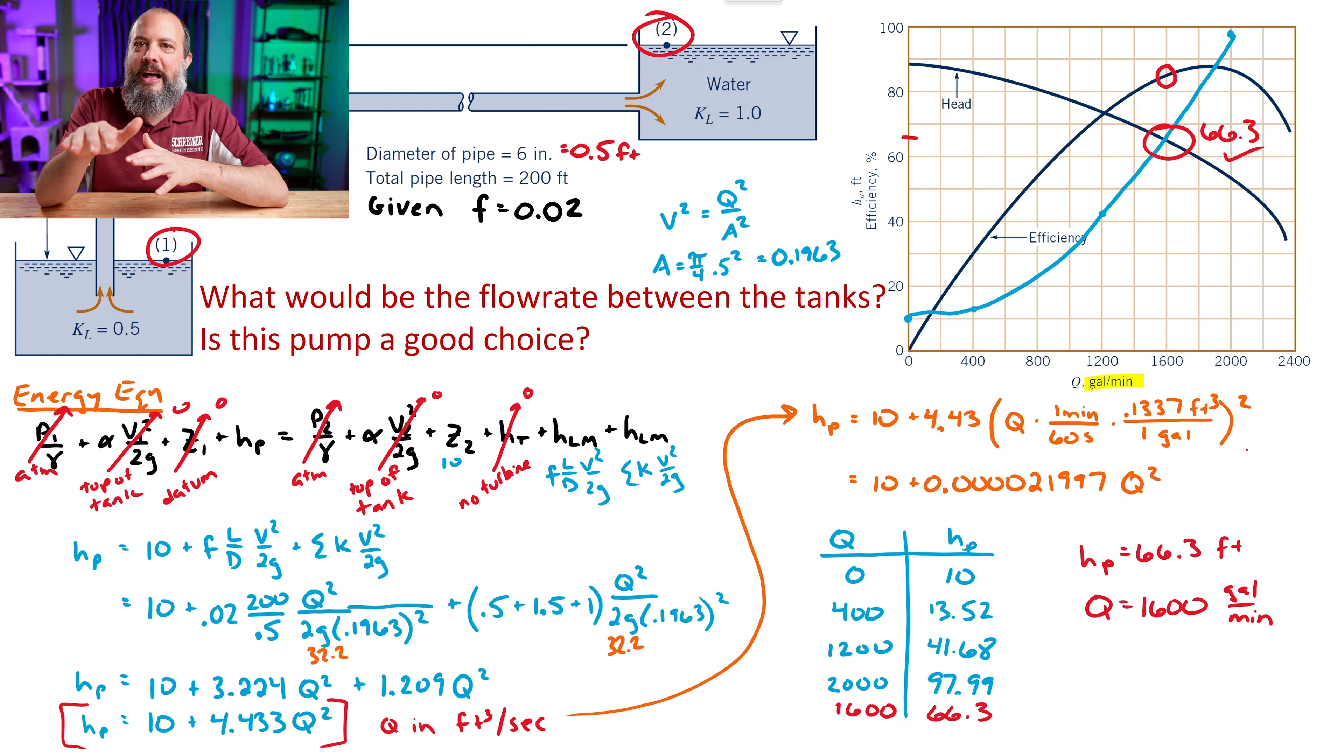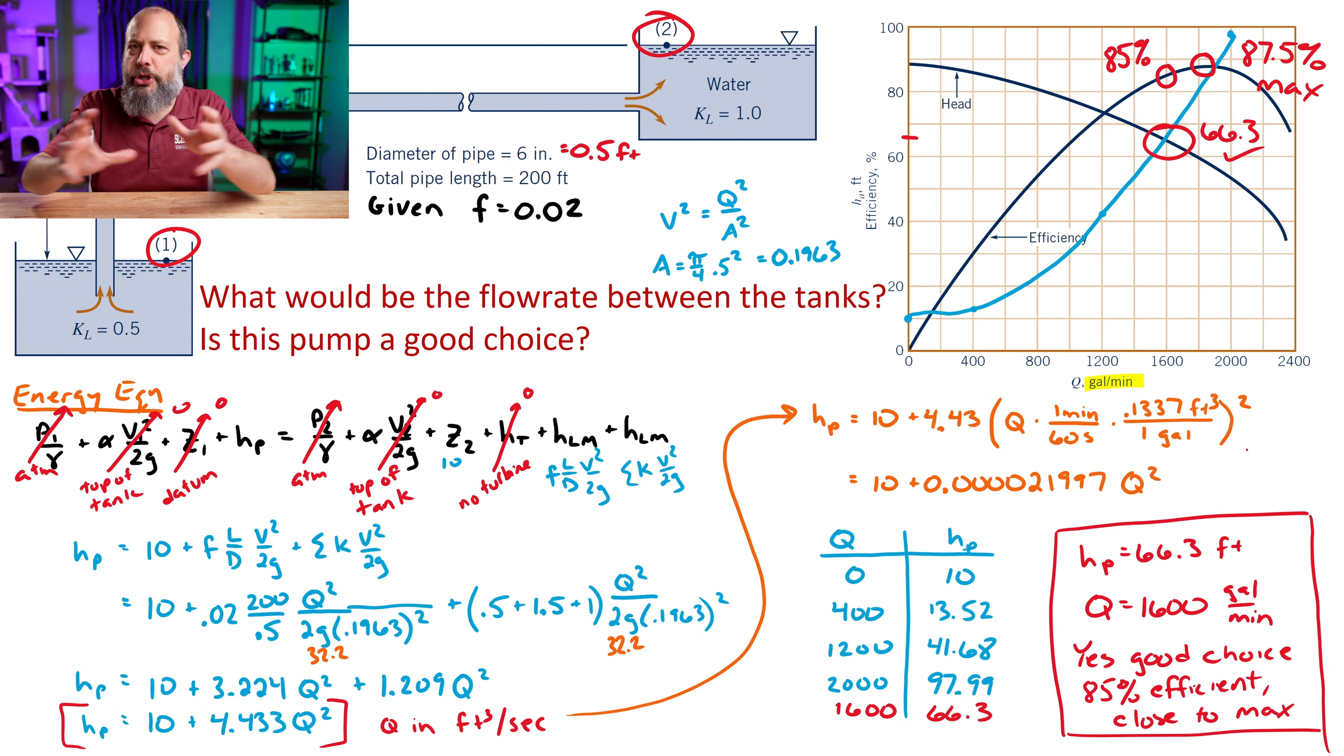But if we assume that 1,600 is a flow rate that we can work with, then this pump is a good choice. The maximum value for efficiency, we can see this peak, is right around 87%. And the flow rate we're working at is really close to that. If we go up at 1,600 gallons per minute, we're at about an 85% efficiency, which is really close to the peak. So anything between about 1,400 gallons per minute and 2,200 gallons per minute is probably a good use for this pump. Kind of in that area of the curve, all pretty close to peak efficiency, it's a good time for this pump.